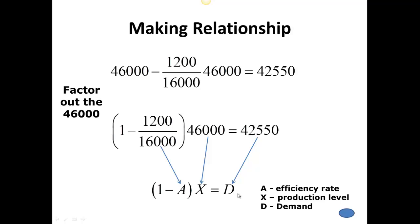We're going to use that formula to answer a different question: what production level do we need in order to meet a known demand? Economists can survey people to find the demand, then work backwards using these relationships to figure out what the economy should be producing. In the next video, we'll look at the interaction effects between multiple factors — rather than just one factor like spales, we'll look at things like yams and pigs. Thanks, and have a good day.